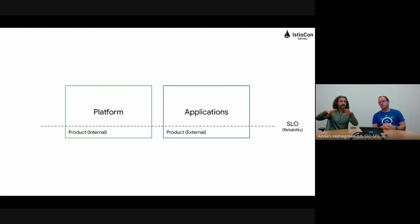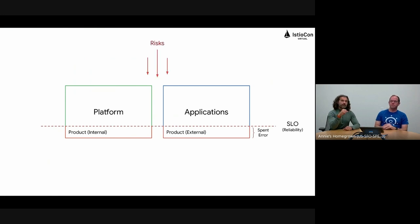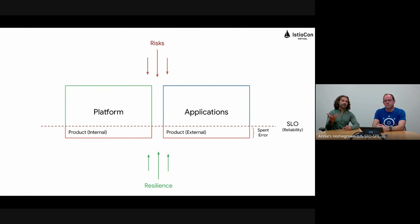We almost think of the SLO line as the surface of the water. Notice we didn't draw this line right below the thing — we don't want 100% uptime, there's always going to be something broken, and that's just the nature of distributed systems. We're okay with that. In fact, we need it — this is where innovation happens, and this is what we sometimes call error budget. There are two types of risks: known and unknown. Risks are forces constantly trying to sink your products — platforms are breaking, applications are breaking — and you put resilience or countermeasures in place to mitigate those risks and keep things afloat.